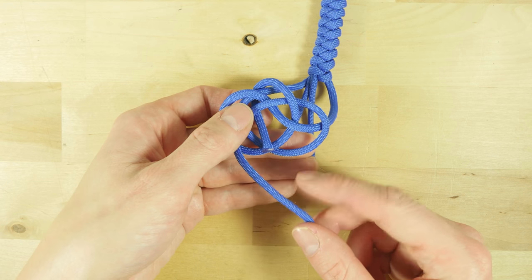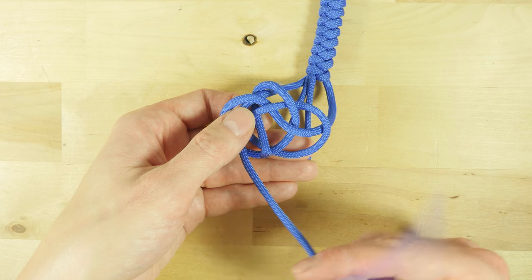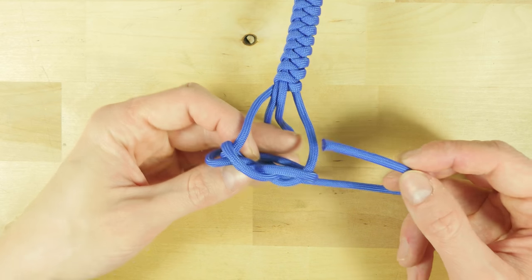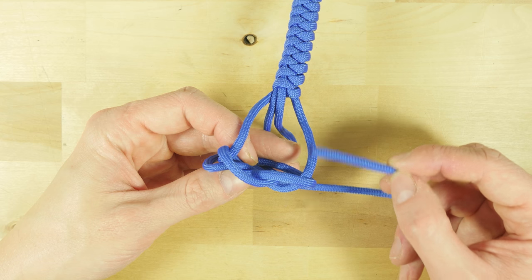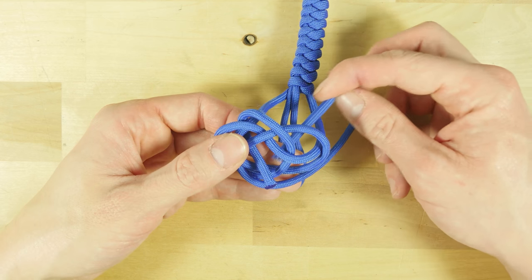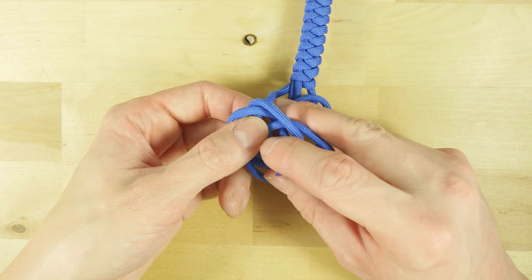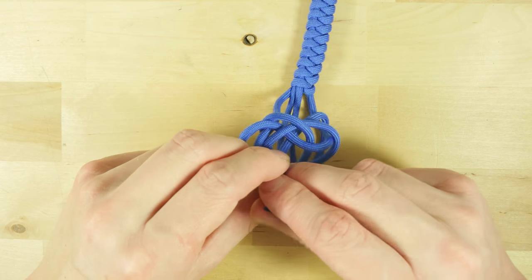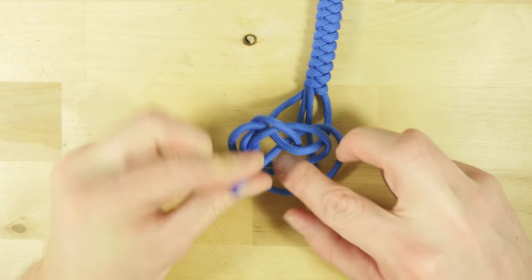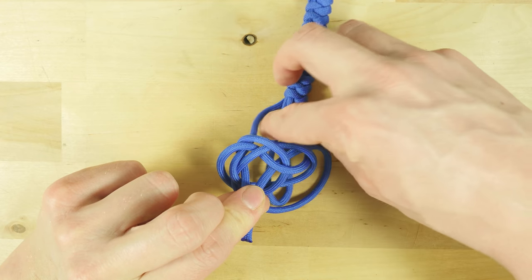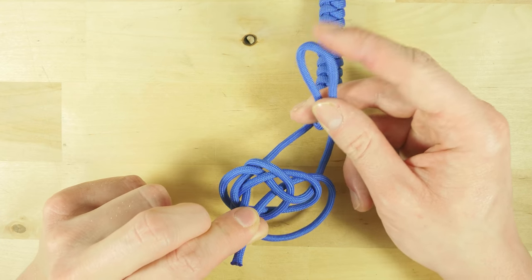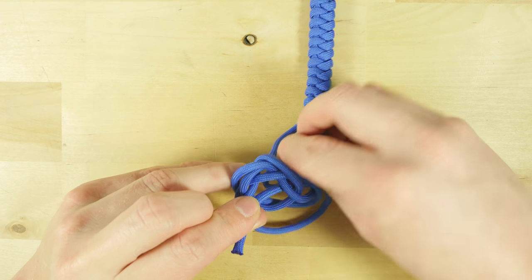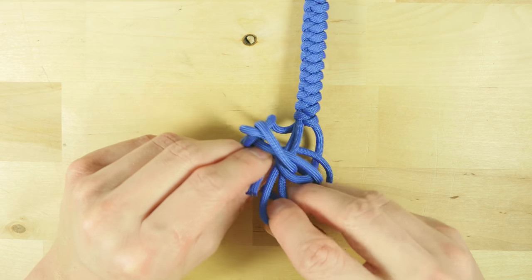Now pick up this top right strand, pass over this top left strand, then under and through the middle. Pick up the bottom left strand, pass over this top right strand, then under and over and through the middle. With this, the lanyard knot is pretty much tied. Pick up the loop and feed it through the center of the lanyard knot as well.